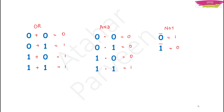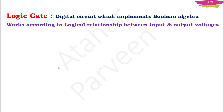For AND operation, you are multiplying: 0 into 0 is 0, 0 into 1 is 0, 1 into 0 is 0, and 1 into 1 is 1 — same as regular mathematics. For NOT operation: complement of 0 is 1, and complement of 1 is 0. This is your NOT operation.